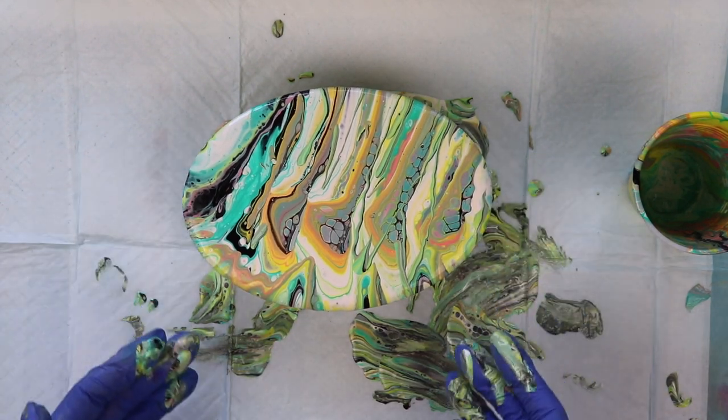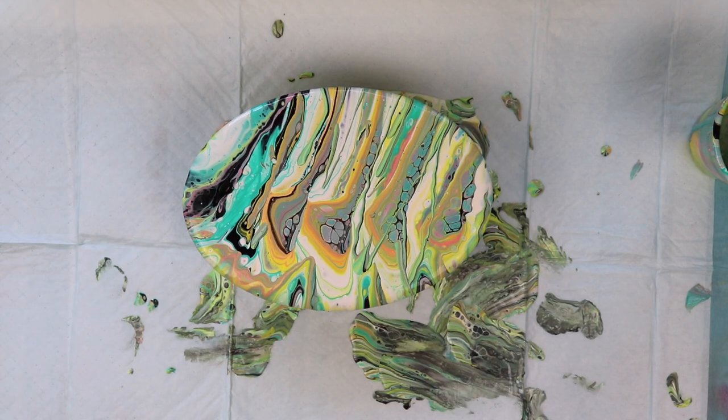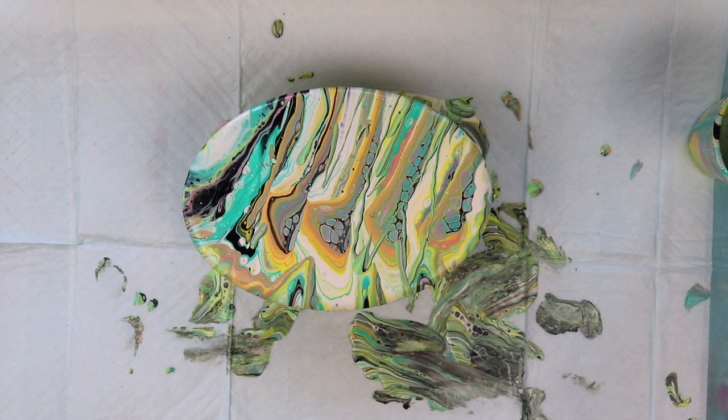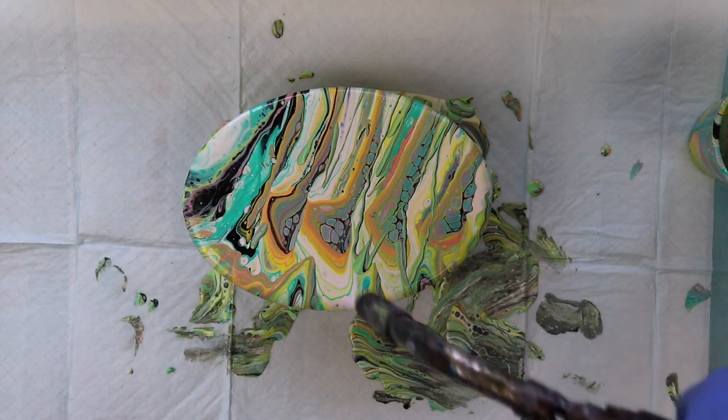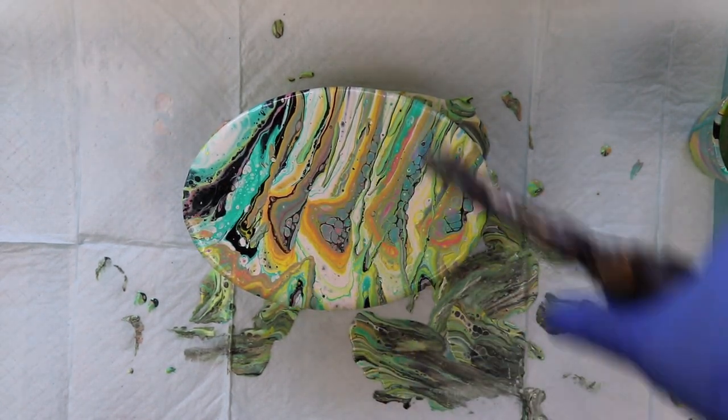Okay what I want to do is take my torch and torch it to see if I can get any more cells coming up. We've got some cool cells coming up there already though. Got a few more little cells popping up. Probably going to change while it dries because there's a lot of paint on here.